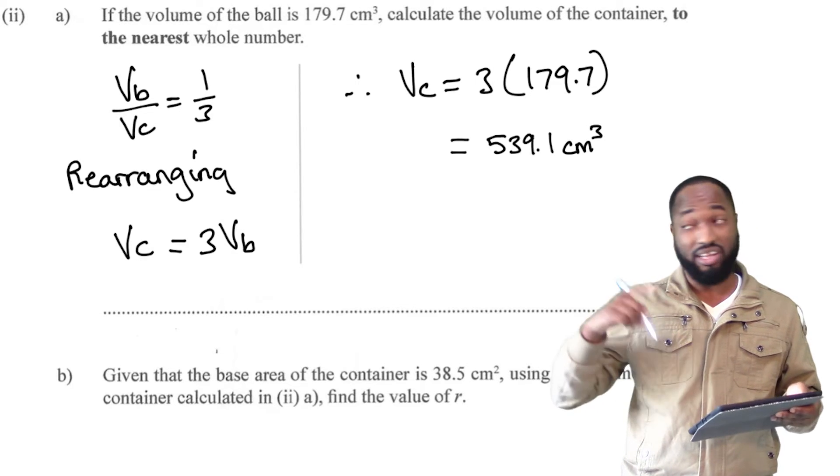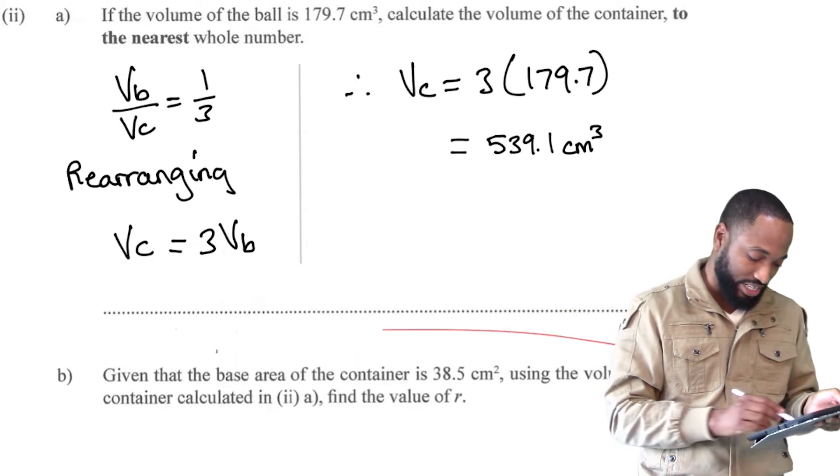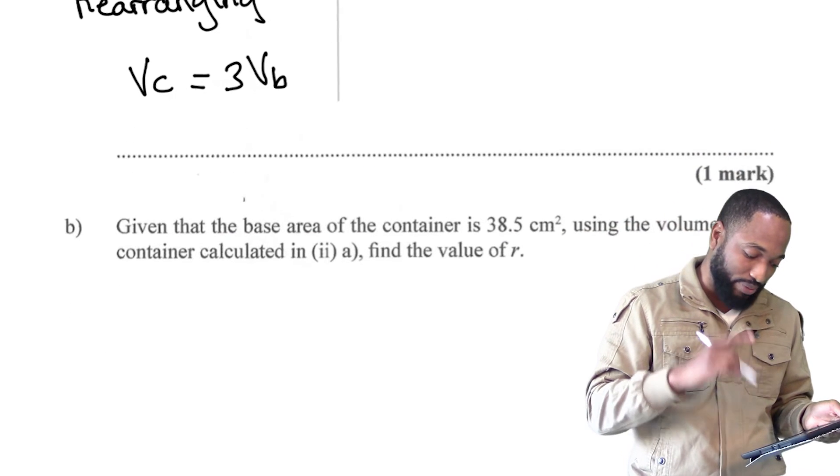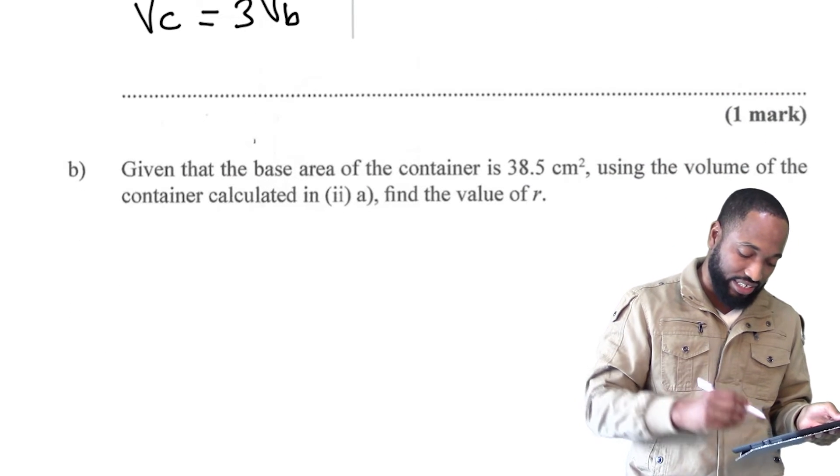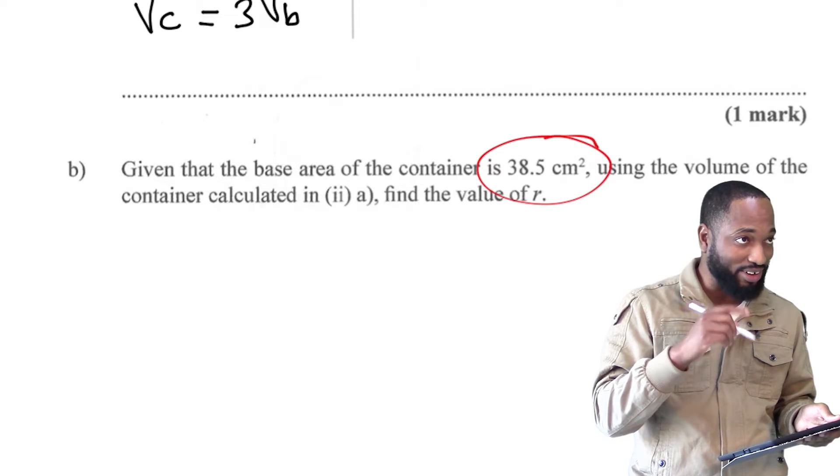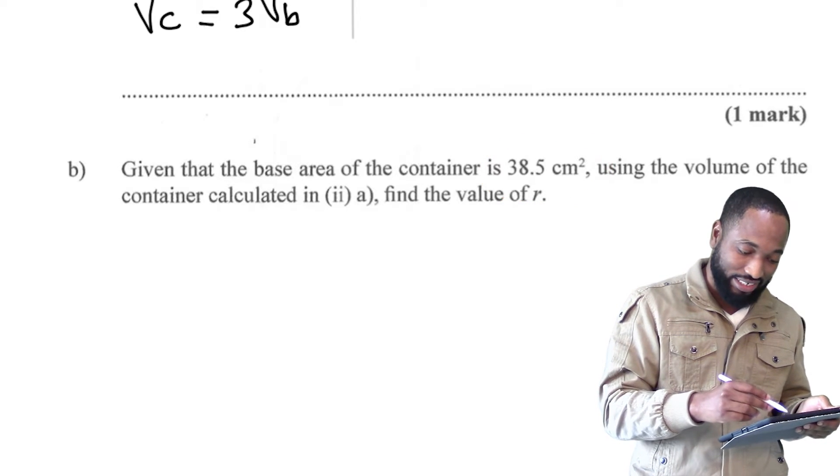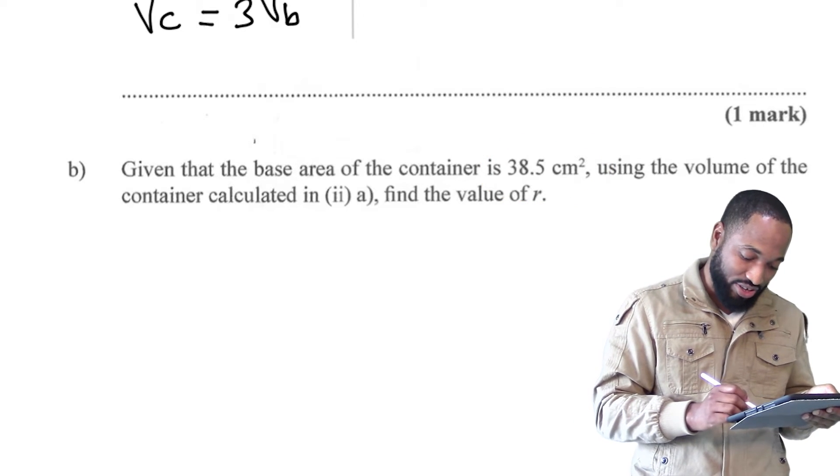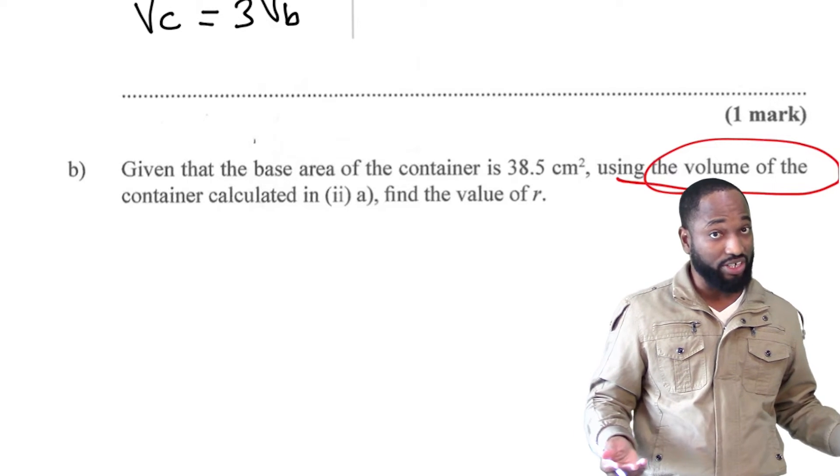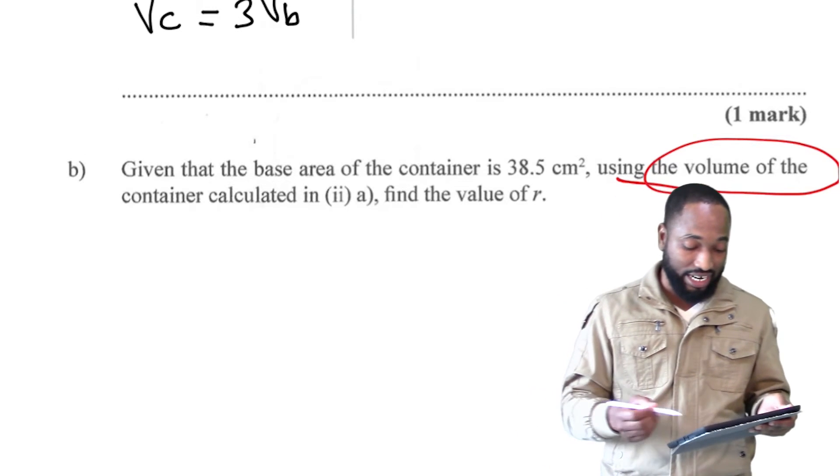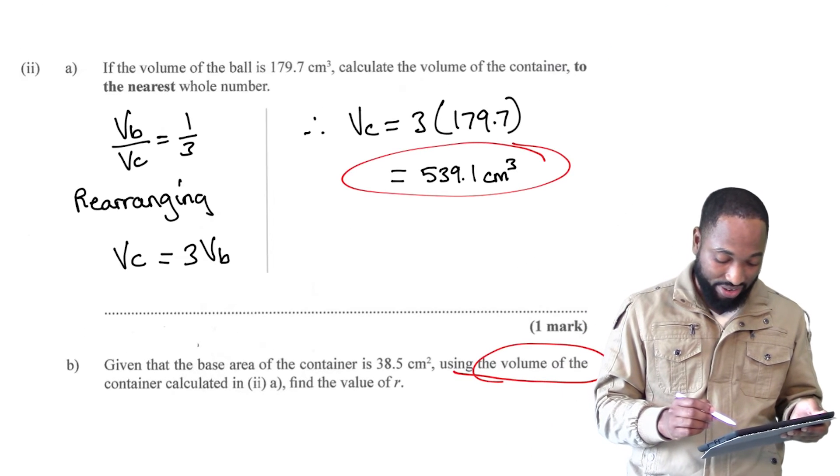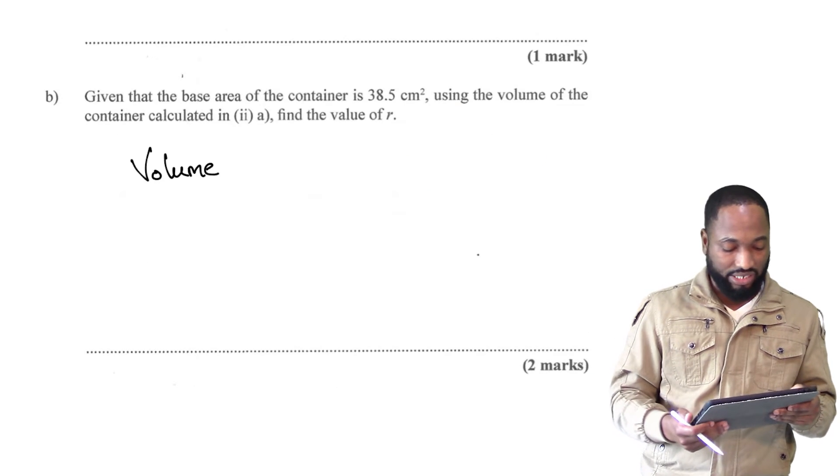But the next question, a lot of people got the answer but didn't get the full marks. Now watch this question. You've seen it actually at the bottom of the screen here. Given that the base area of the container is, so they give you the area and now they're asking you to find the radius. Now everybody know if they give you the area of a circle, you could find the radius using the formula pi r squared. But in this question, they said using the volume, so you need to follow the instructions to get the marks, using the volume of the container that you just calculated here, find r.